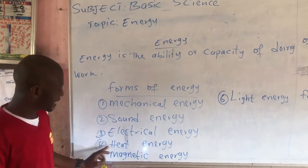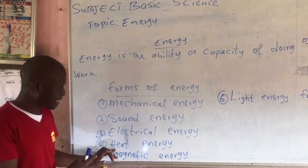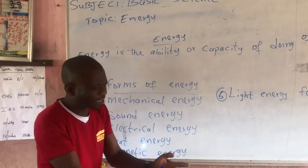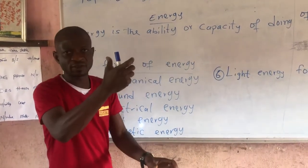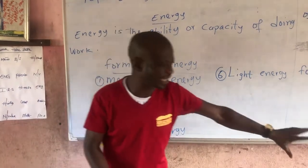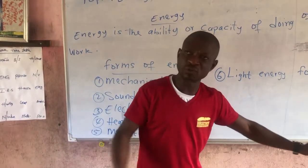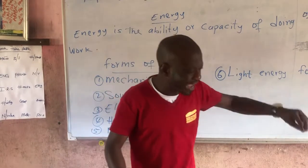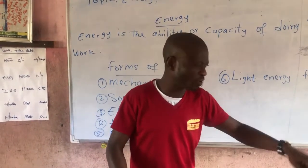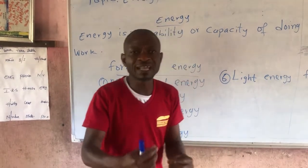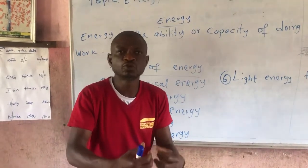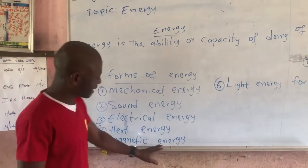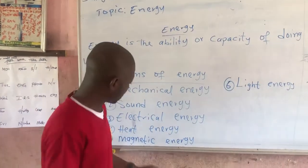The next one is heat energy. Heat energy is either a result of setting a fire, or when you connect your boiling ring or heater to a switch. When the electric current is on and you put water on the boiling ring, before you know it the water begins to boil. That is what we call heat energy.